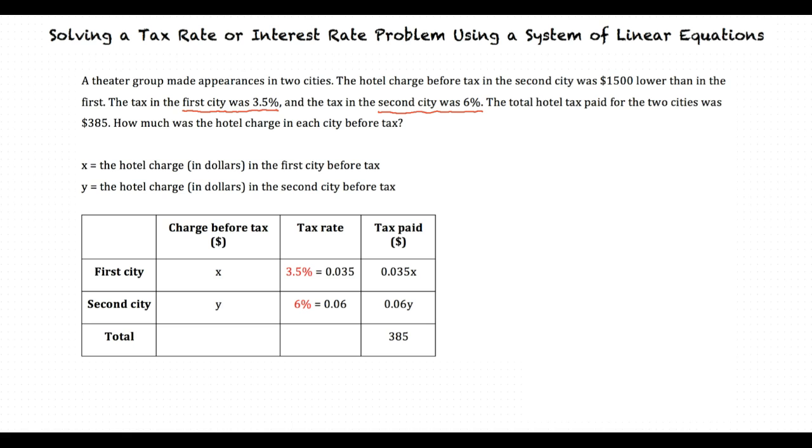The problem told us that the hotel charge before tax in the second city was $1,500 lower than in the first, so let's use that information to create a linear equation for the hotel charge before tax in the second city.